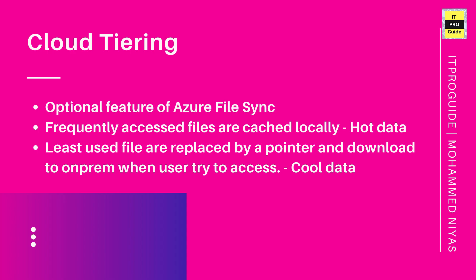Let's understand cloud tiering. Cloud tiering is an optional feature of Azure File Sync. When you enable cloud tiering, the frequently accessed files are cached locally on the server while the other files are tiered to Azure File Storage based on the policy that you configured. When a file is tiered to Azure File Storage, Azure File Sync replaces that file locally with a pointer. Whenever a user tries to open a tiered file, Azure File Sync seamlessly recalls that file data from Azure File Storage.